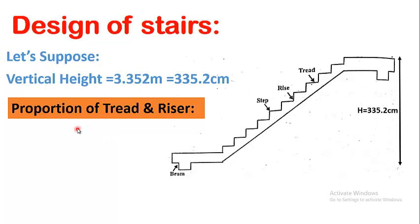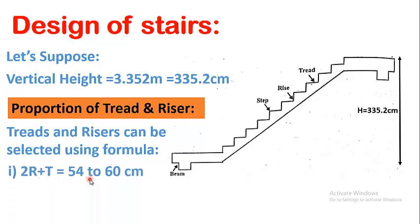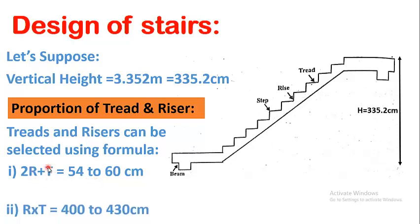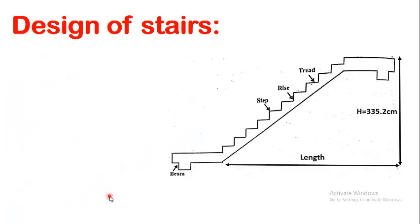Before starting the calculation, one must maintain the proportion of threads and risers. The first formula states that 2R + T must equal 54 to 60 centimeters, meaning the riser height and thread length you select must lie within this range. R is for riser and T is for thread. The second formula states that R multiplied by T — riser multiplied by thread — must lie within the standard range.